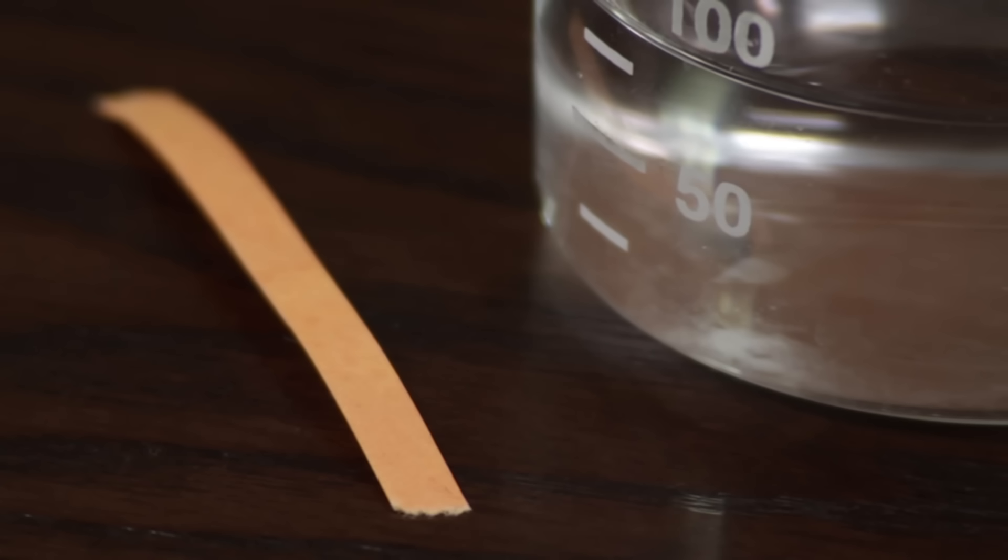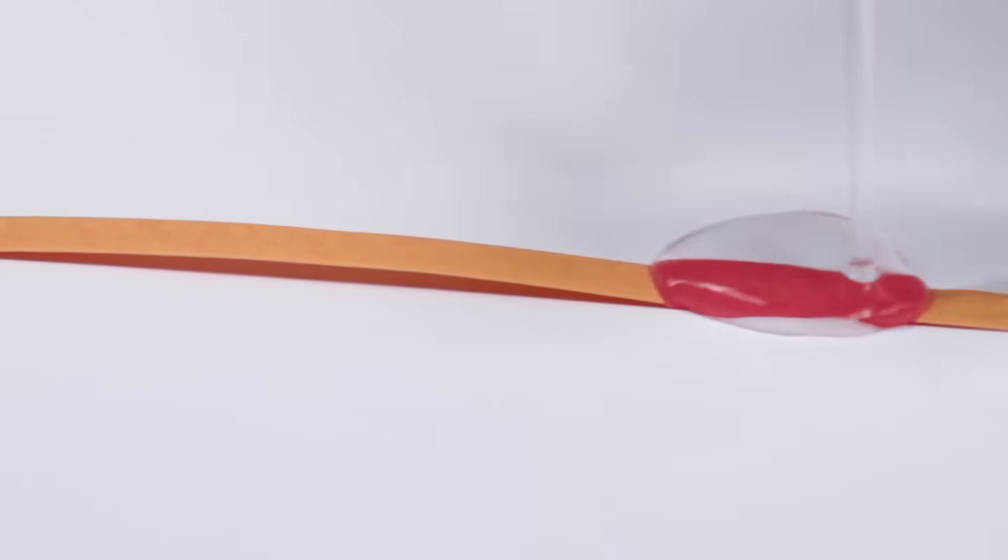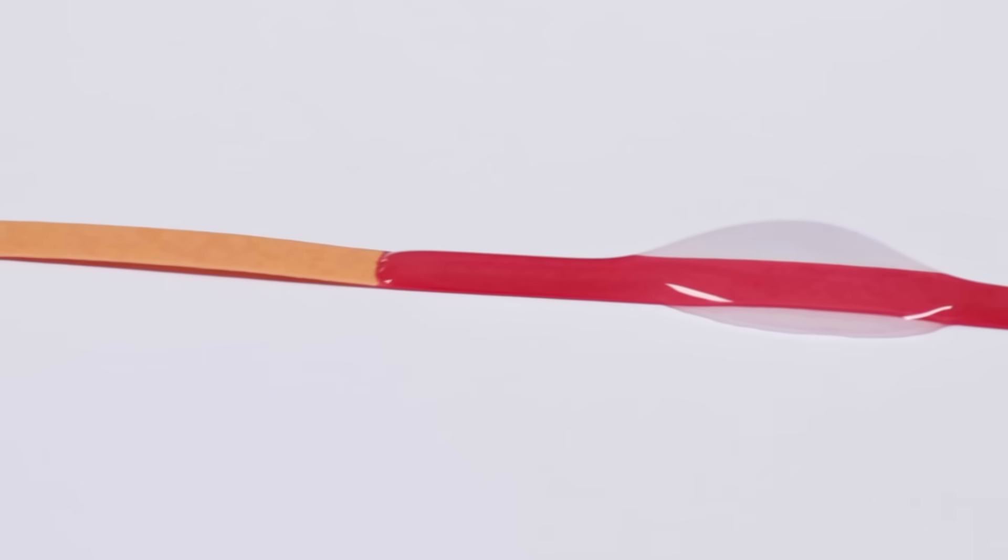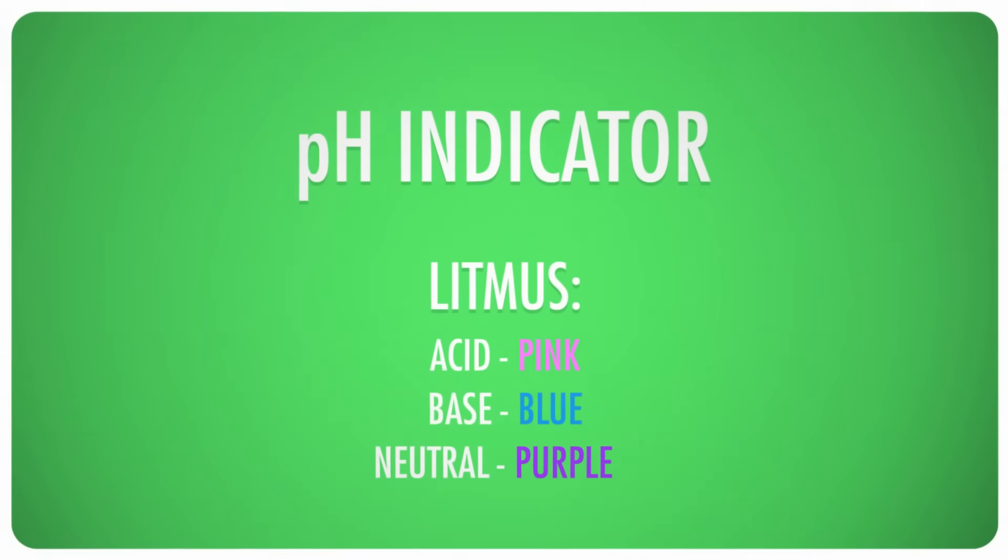Water is neutral, so 7 is the center of the scale. And I can prove it, too! This is a strip of paper that's been infused with a chemical called litmus. Litmus is a pH indicator, a chemical that turns different colors at different pHs. There are many different indicators with many different colors, but we'll talk more about those next week. For now, just know that litmus paper turns pink in acids, blue in bases, and a sort of light purple when it's neutral.